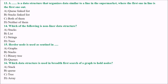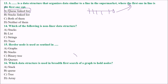Next: a data structure that organizes data similar to a line in a supermarket — where the first one in line is the first to come out — is which structure? The answer is Queue linked list. The answer is A.